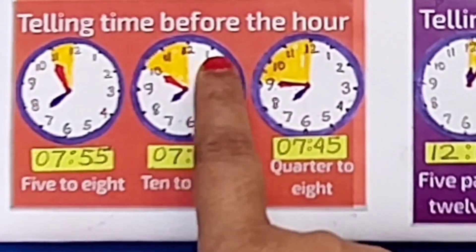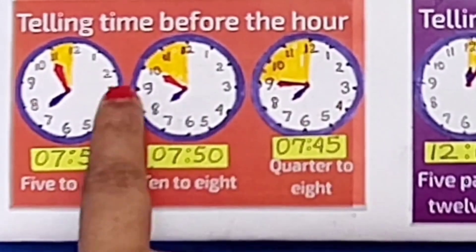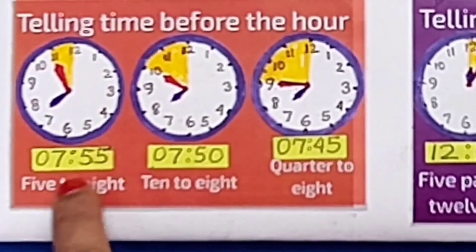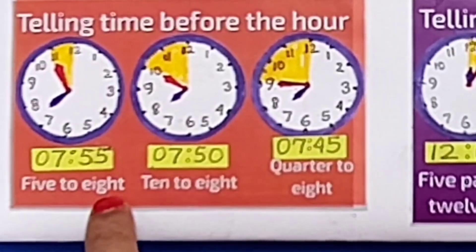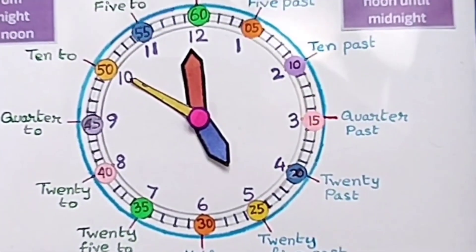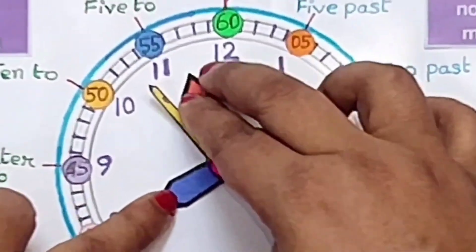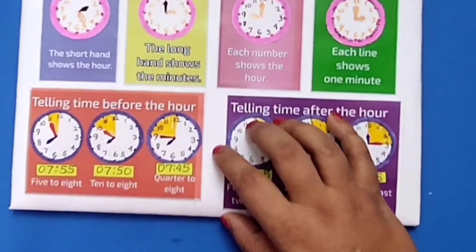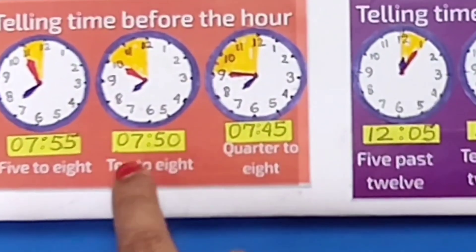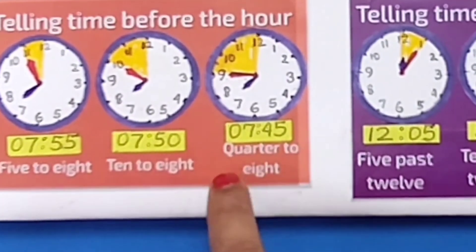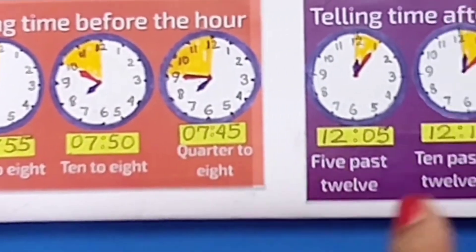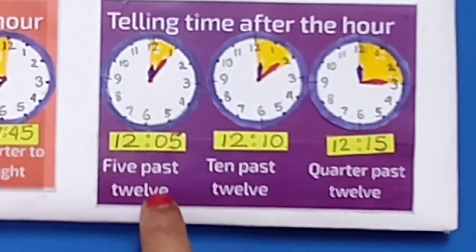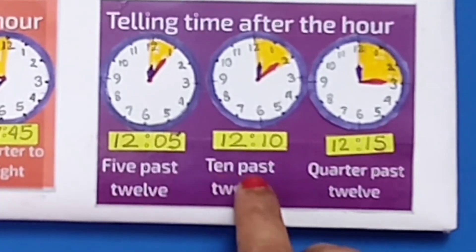Telling time before the hour — there are two ways of telling time. We can say it 7:55 or 5 to 8. When the long hand is on 11, that means it is 55 minutes, that's why it's called 7:55. Now 7:50 is 10 to 8, and 7:45 means quarter to 8. Telling time after the hour — 12:05 means 5 past 12, 12:10 means 10 past 12, and 12:15 means quarter past 12.